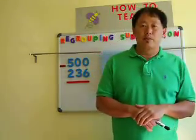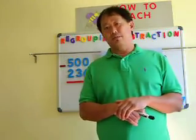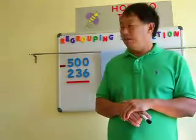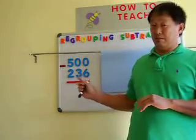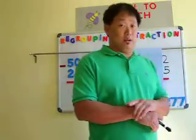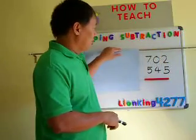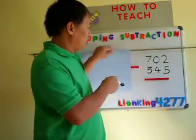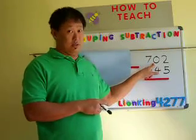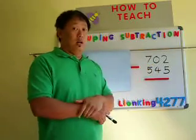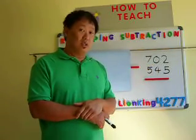Hello, welcome to my regrouping subtraction lesson. This will be the final phase for subtraction — today we'll be dealing with zeros. Let me start here: 702 take away 545. It involves a zero in the middle.